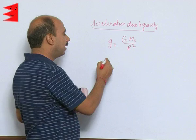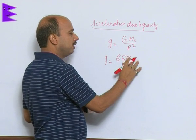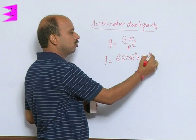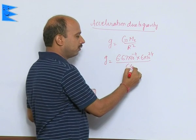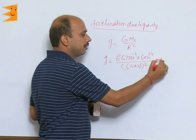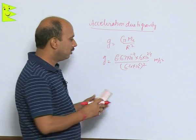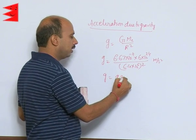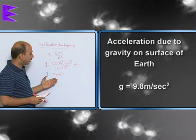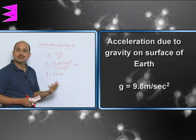If you put all these values here for the surface of Earth, 6.67 into 10 raised to power minus 11, that is 6 into 10 raised to power 24 kg, here 6.4 into 10 raised to power 6 whole square, unit we can write meter per second square. For surface of Earth, if you put all these values and calculate, you will be getting 9.8 meter per second square. So acceleration due to gravity on the surface of Earth is 9.8 meter per second square.